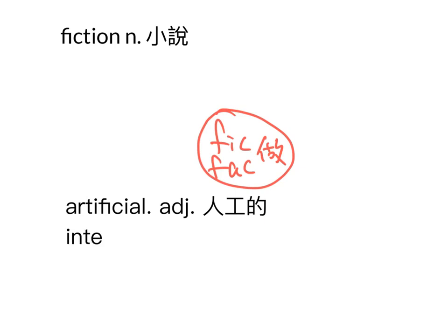接下来artificial，这个字是形容词，art是艺术，fic是做，做出来的艺术不是真的，意思叫做人工。顺便补充，加上intelligence就变成artificial intelligence，人工智能。efficiency这个字名词就是效率。